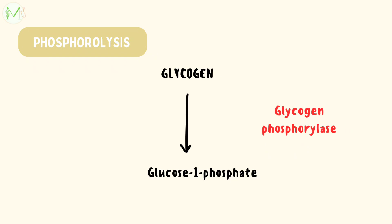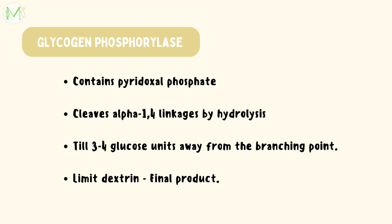The first step involves glycogen phosphorylase. Glycogen, in the presence of glycogen phosphorylase enzyme, gets converted to glucose-1-phosphate. This enzyme contains pyridoxal phosphate as a prosthetic group. It works by hydrolyzing alpha-1,4 glycosidic linkages in the glycogen molecule, until it reaches a glucose residue 3-4 glucose units away from the branching point.